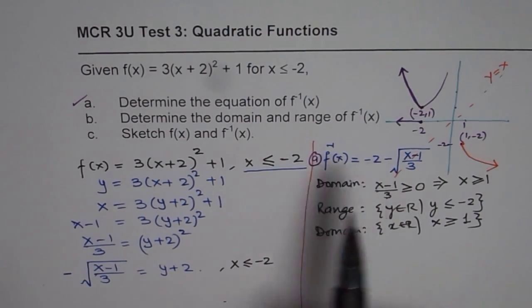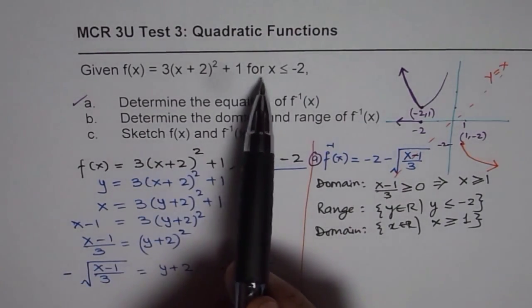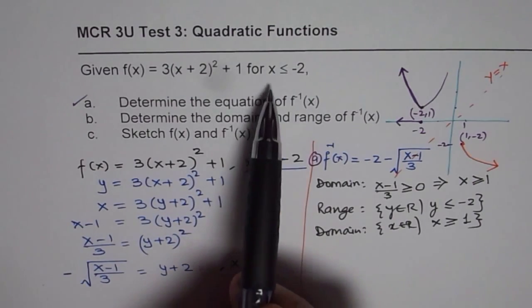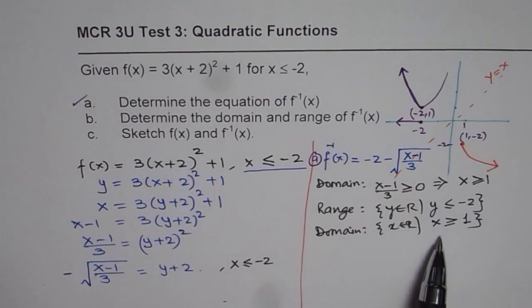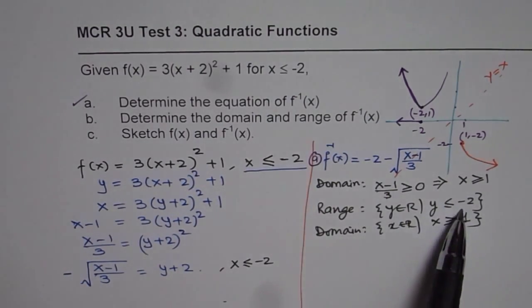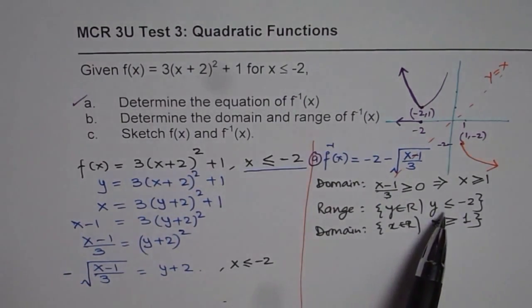You could have also got domain and range by swapping domain range from here. Domain is given as x is less than minus 2, it becomes the range. So y less than or equal to minus 2 becomes the range of the inverse function. So you could get directly also.